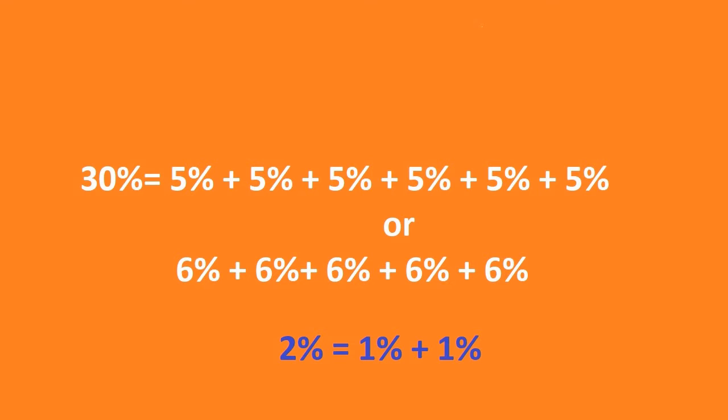Simply put, a 2% can be represented as a combination of two 1% parts. It is that simple.